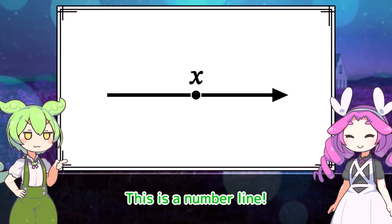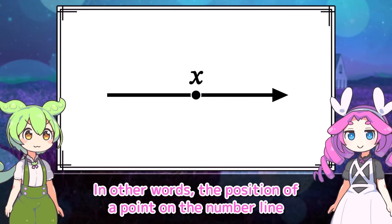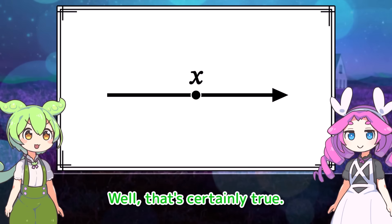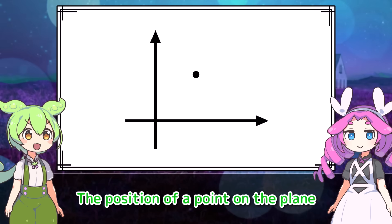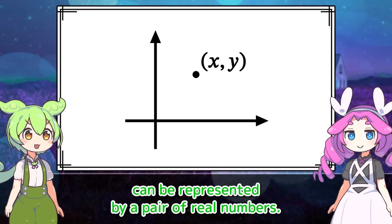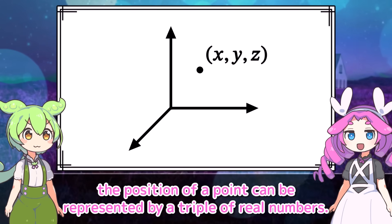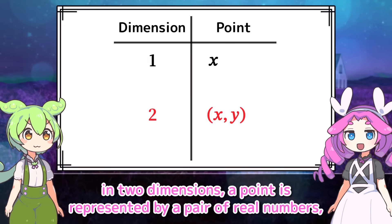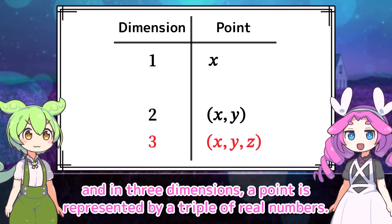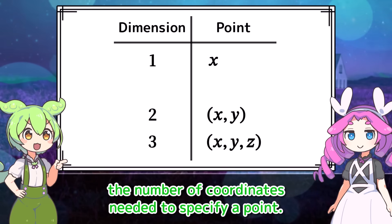Let's start with one dimension. This is a number line. The number line represents all real numbers. In other words, the position of a point on the number line can be represented by a single real number. Then what about the two-dimensional case? This is a two-dimensional plane. The position of a point on the plane can be represented by a pair of real numbers — this is what's called coordinates. Similarly, in the three-dimensional case, the position of a point can be represented by a triple of real numbers. So a dimension is the number of coordinates needed to specify a point.